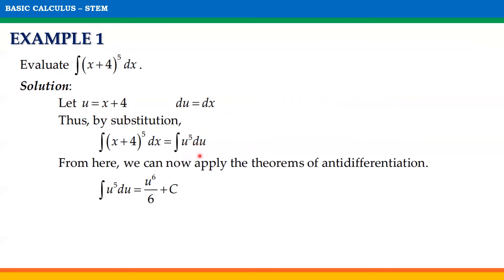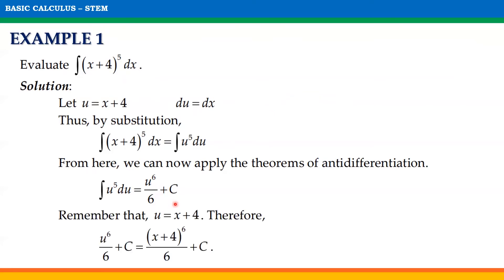From here, we can now apply the theorems of anti-differentiation. Since we have the anti-derivative of u⁵ du, remember that this is equal to u⁶/6 + C. And thus, remember that u is actually equal to x + 4. Therefore, substituting x + 4 for u, we will have our final answer to be (x + 4)⁶/6 + C. Therefore, this is the indefinite integral of (x + 4)⁵ with respect to x.